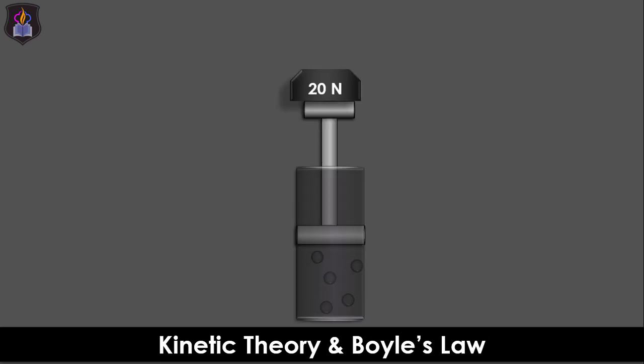Let's now use the kinetic theory to explain Boyle's law. Consider a given mass of gas which is made to occupy a certain volume in a container with an adjustable piston by placing a stable weight of say 20 N on the piston. At constant temperature, the average velocity of gas particles is constant and the gas exerts a constant pressure on the walls of the container because the number of bombardments of the particles with the walls of the container per unit area does not change.